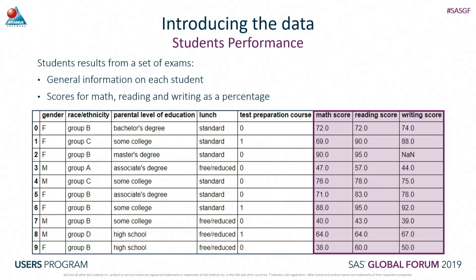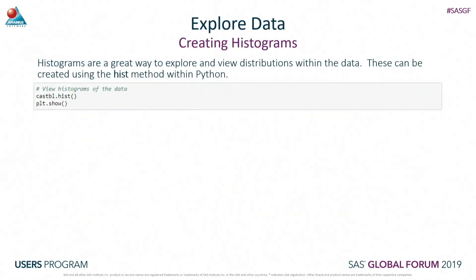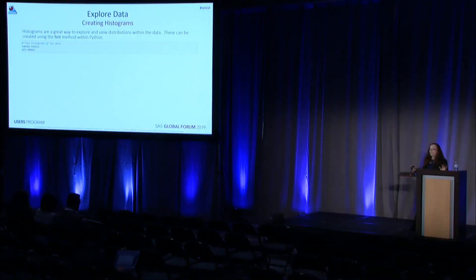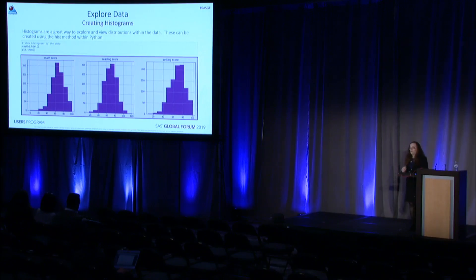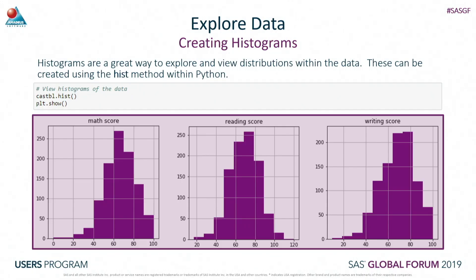A great place to start when you want to explore your data is to use histograms. To create a histogram within Python, it's as simple as running the hist method. By default, this creates a histogram for each numeric variable within my CAS table - one for math score, one for reading score, and one for writing score. Now, if we look closer at the reading score in the middle, we can see that the x-axis goes well above a hundred, so there's some kind of data quality issue we need to address.